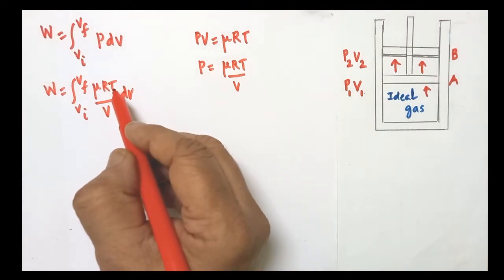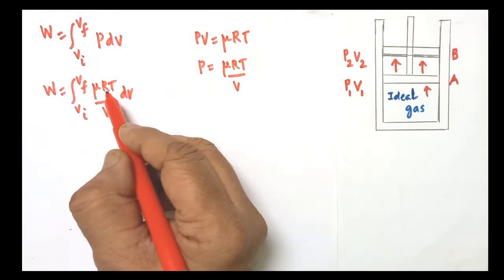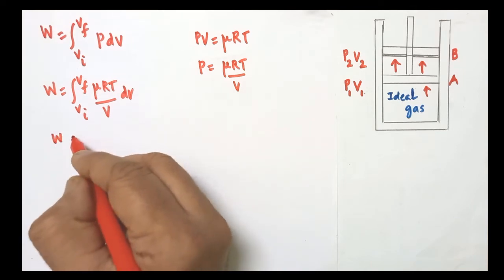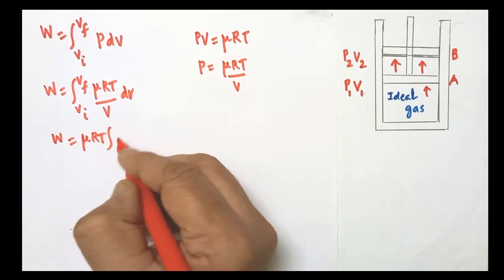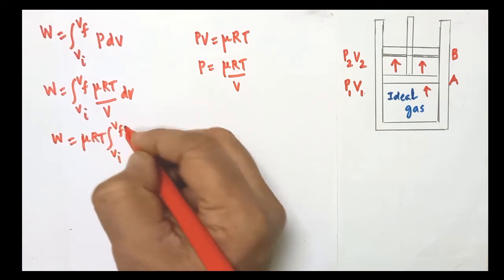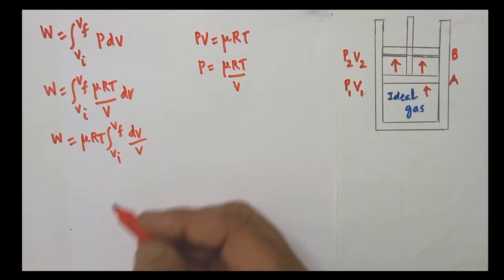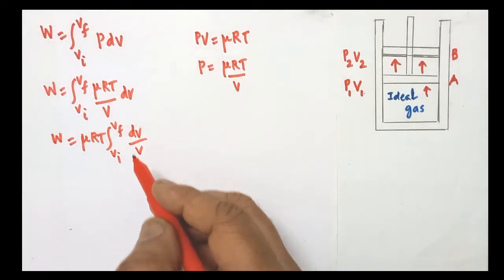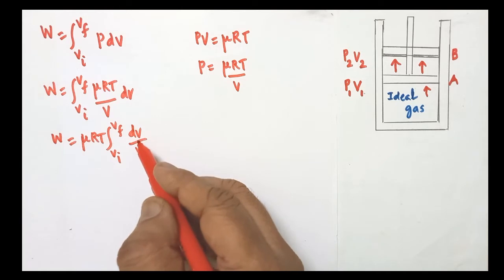In an isothermal process, temperature T is constant. Since μ, R, and T are all constants, they can be taken outside the integral. So we write: W = μRT times the integral from VI to VF of dV/V. From integration formulae, we know that the integral of dx/x equals log base e of x.